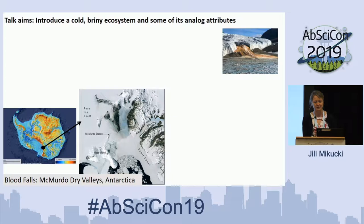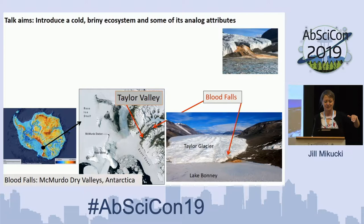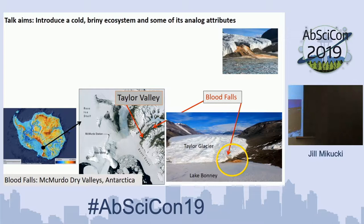It's known as Blood Falls. It's located in the McMurdo Dry Valleys region of Antarctica, which is the largest ice-free region of the continent. It's found within the Taylor Valley and at the terminus of the Taylor Glacier, which is an outlet glacier of the East Antarctic Ice Sheet — and it's quite a visceral feature.